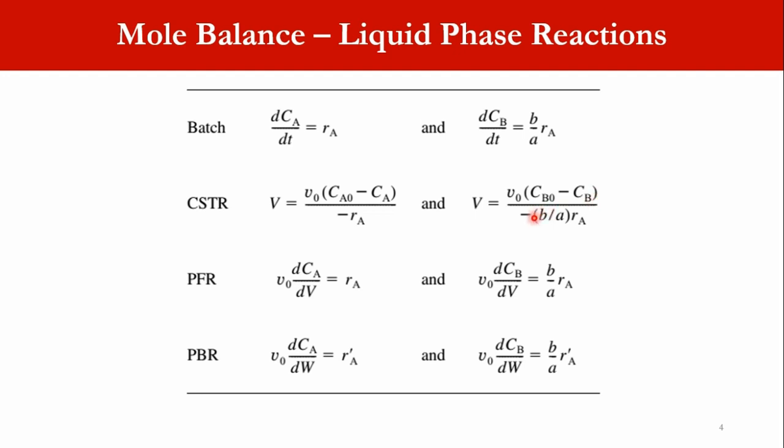For PFR, V0·dCB/dV = rA, and in the same way we can write the equation for PBR. The only difference will be V replaced by W and rA replaced by rA'.